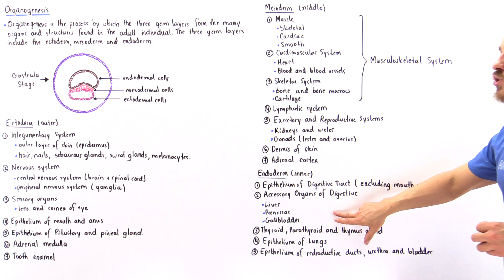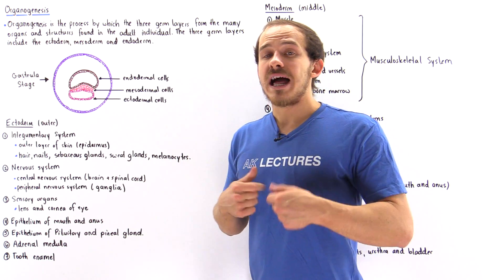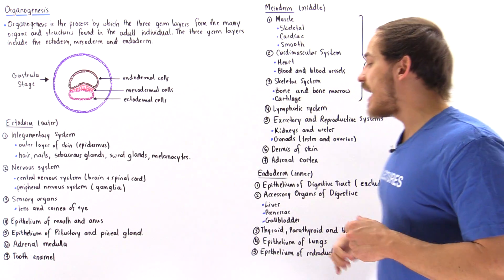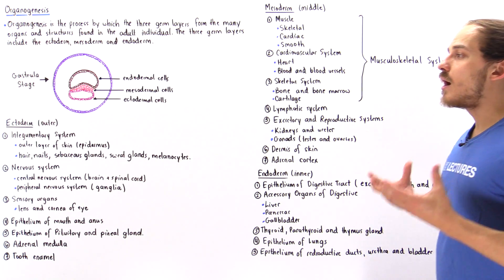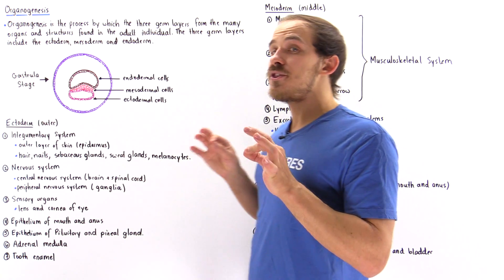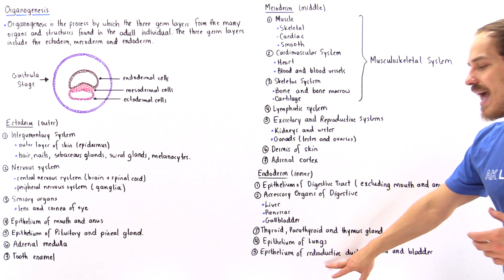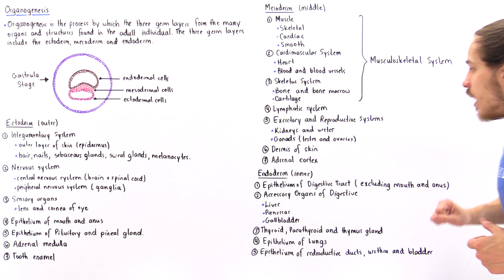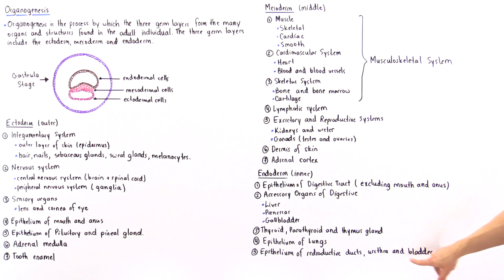What else does the endoderm form? The thyroid gland, the parathyroid gland, and the thymus gland are all formed by the endoderm. The lungs — and more specifically the epithelial layer of the lungs — are also formed from the endoderm, as well as the epithelium of our reproductive ducts, the urethra, and the bladder.